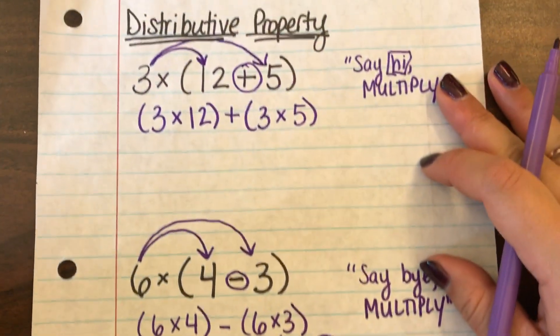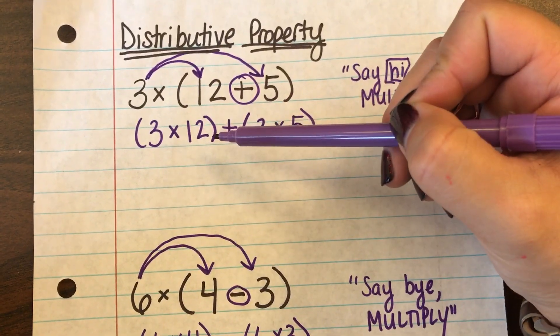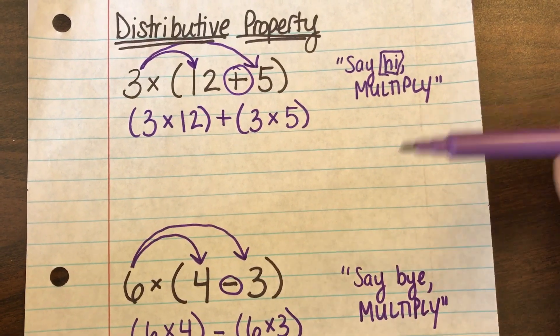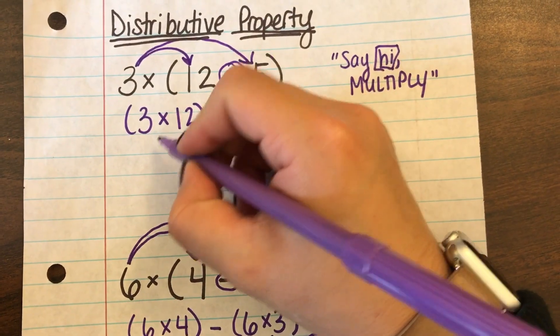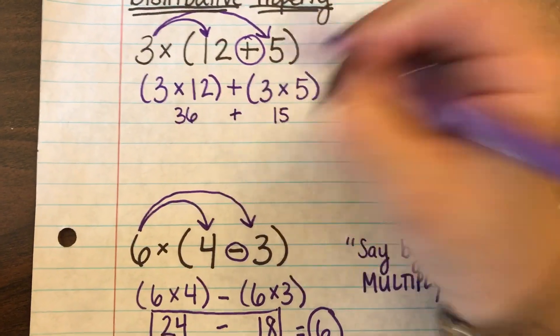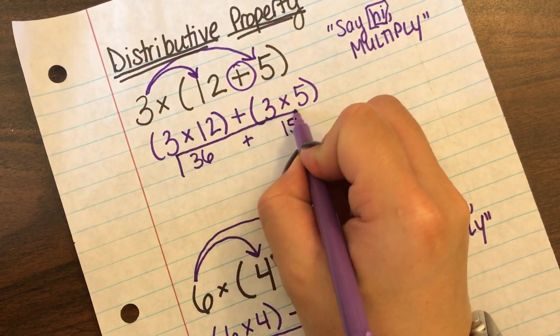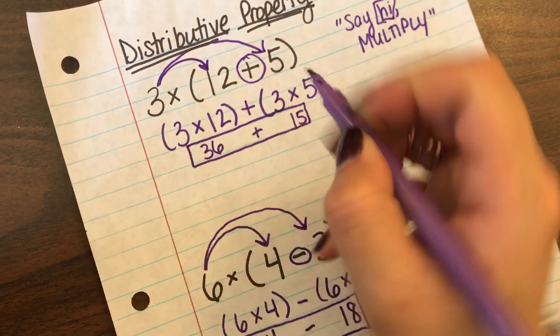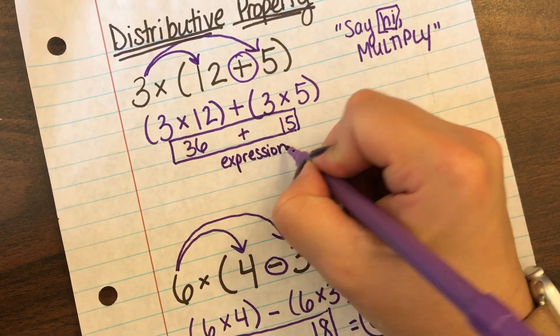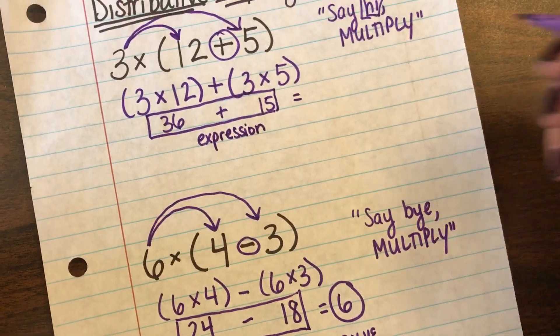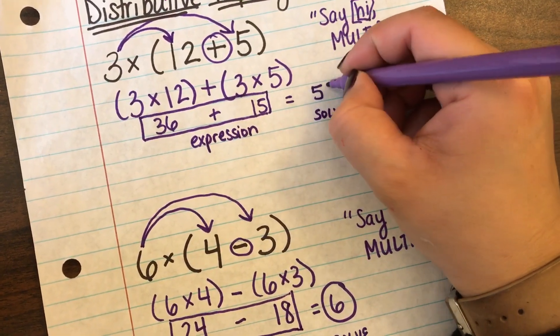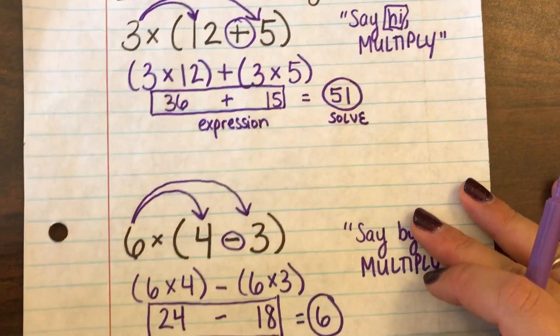Okay now I'll show you one more time on this problem up here. So we had gotten 3 times 12 say hi multiply plus 3 times 5 say hi multiply. So if I wanted to write another expression for it I would just do 3 times 12 which is 36 and 3 times 5 which is 15. Leave it as a plus. This is your expression. And if I wanted to solve that it would be 51 because 36 plus 15 is 51.